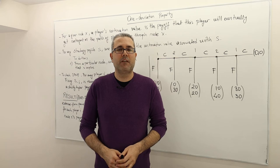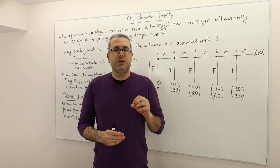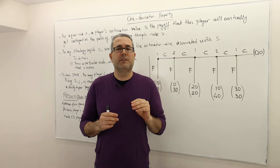Hello everyone. In this episode we're going to talk about a very important property called the one deviation property. We use it to check whether a strategy profile is a subgame perfect Nash equilibrium or not. It's a very useful tool.